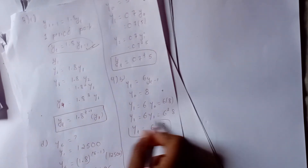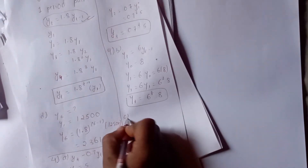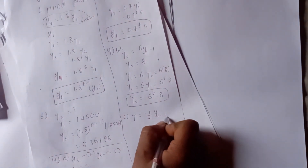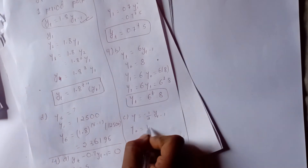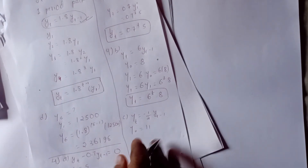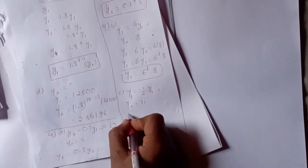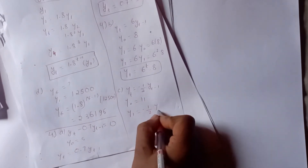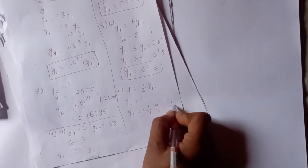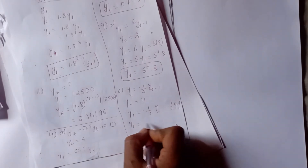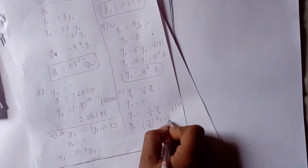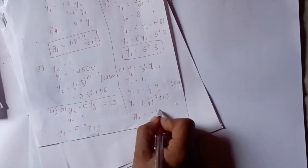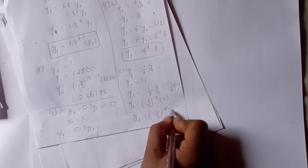This problem is: yt equals minus half of yt minus 1, with y0 equals 11. So y1 equals minus 1 by 2 times 11, y2 equals minus 1 by 2 squared times 11. The general solution is yt equals minus 1 by 2 to the power t times 11.